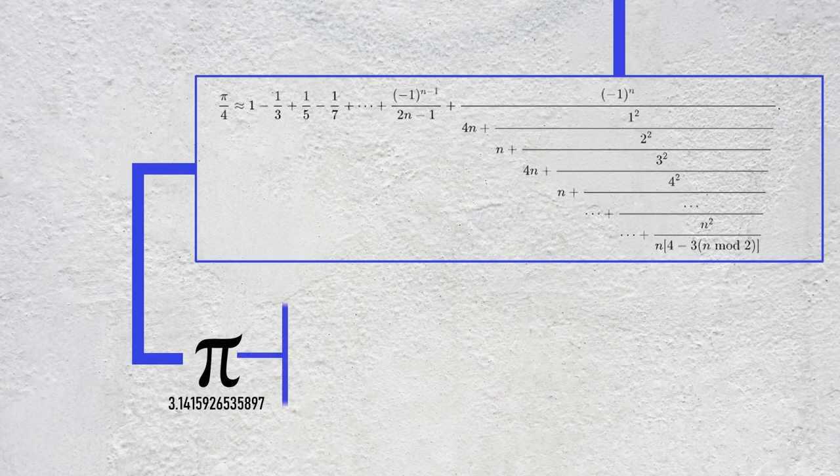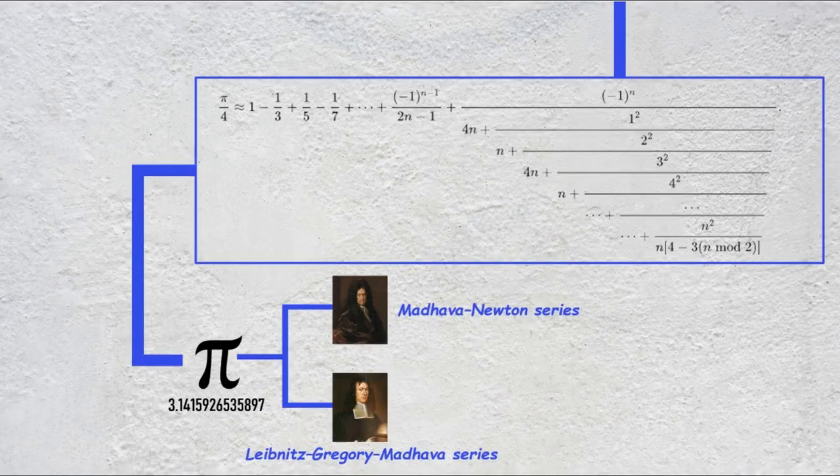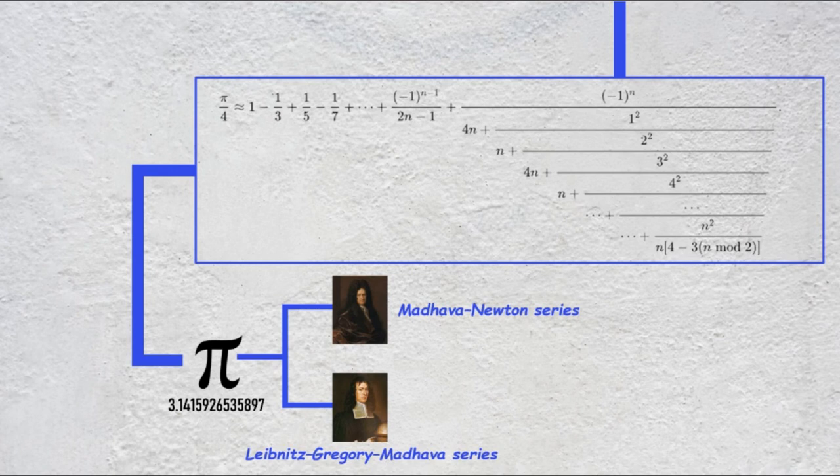This formula is also popular by the name of Madhava Newton series or Leibniz Gregory Madhava series due to its rediscovery by Gregory in 1671 and later by Leibniz in 1676.